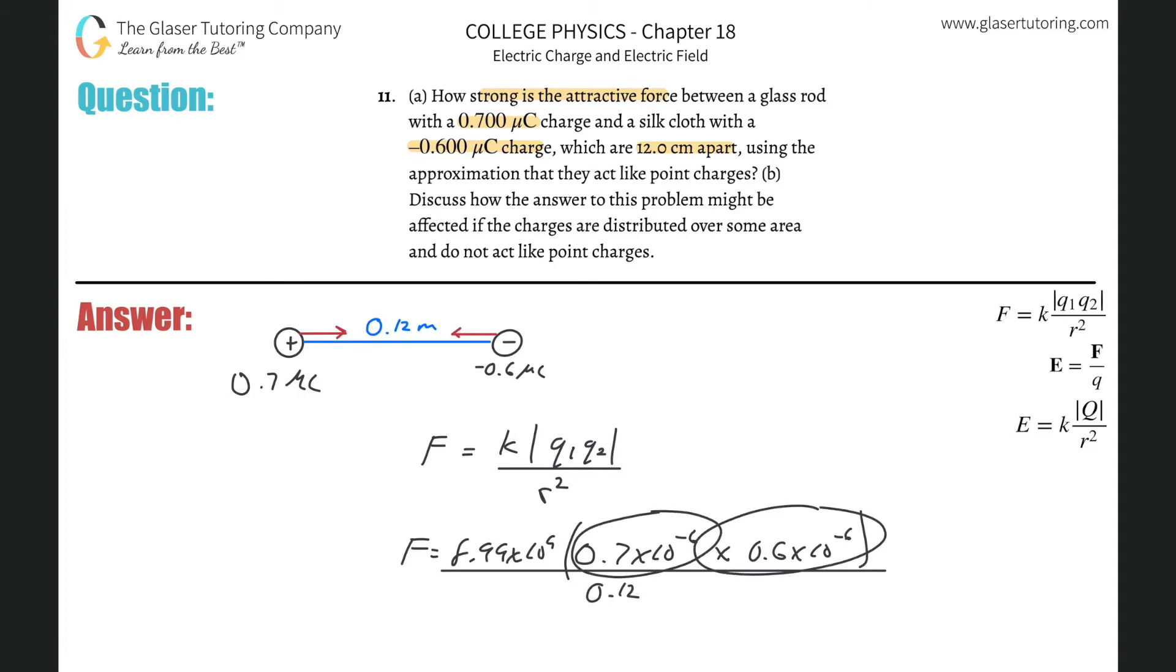If you want to know how I did this conversion, check out number 10. I talked about all that in that problem. So 8.99 times 10 to the ninth multiplied by 0.7 times 10 to the minus six times 0.6 times 10 to the minus six divided by 0.12 - you got to square that, don't forget to square it.